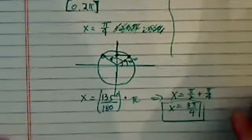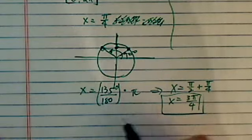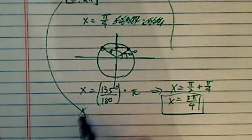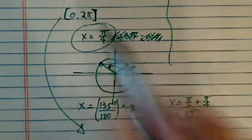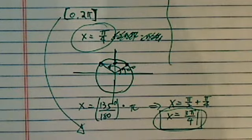So there's the second angle in the 0 to 2 pi domain. So the answer for this particular solution in our 0 to 2 pi domain here, we'll have two answers. We have x equal to pi over 4, or x equal to 3 pi over 4.